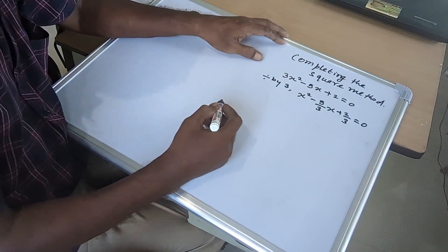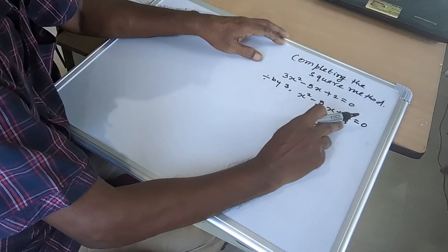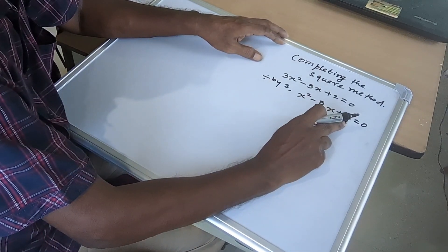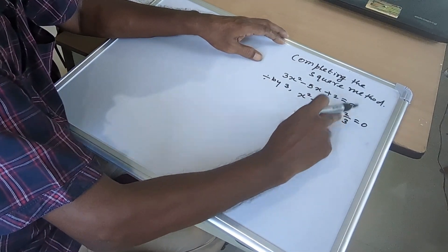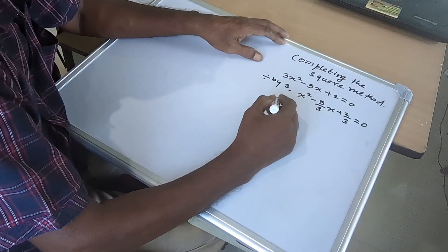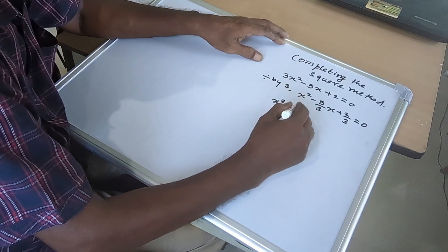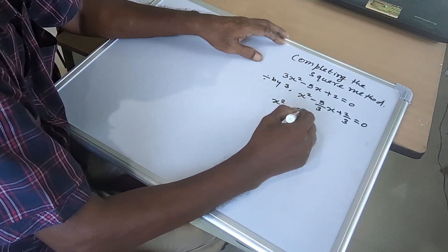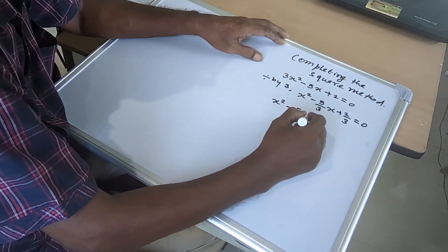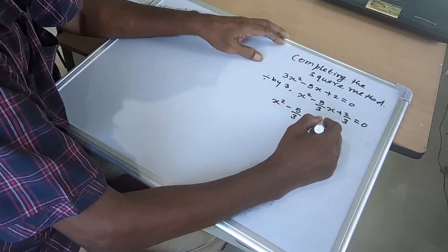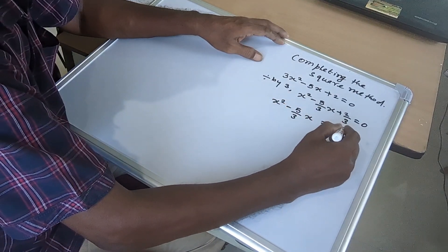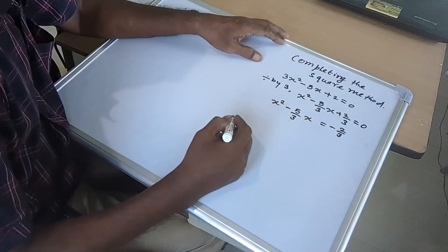Next we bring the constant term 2/3 to the other side. So we get x² minus 5/3 x equal to minus 2/3.